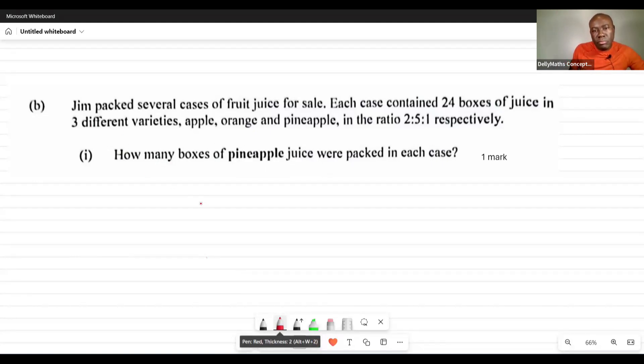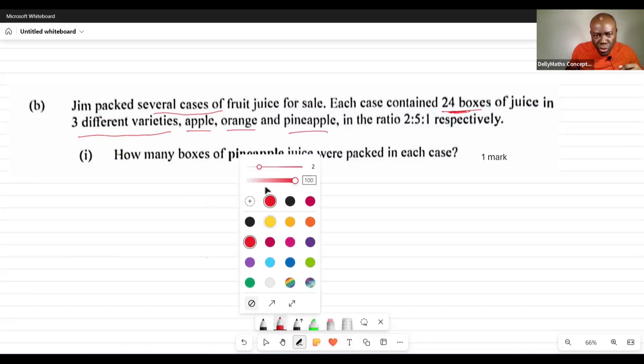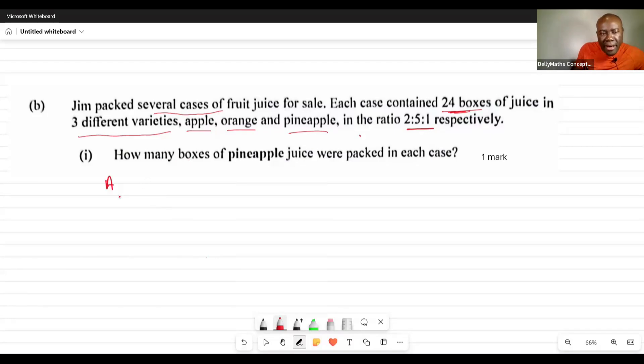Jim packed several cases of fruit juice for sale. Each case contained 24 boxes of juice in three different varieties: apple, orange, and pineapple. The ratio was 2:5:1. How many boxes of pineapple juice were there?